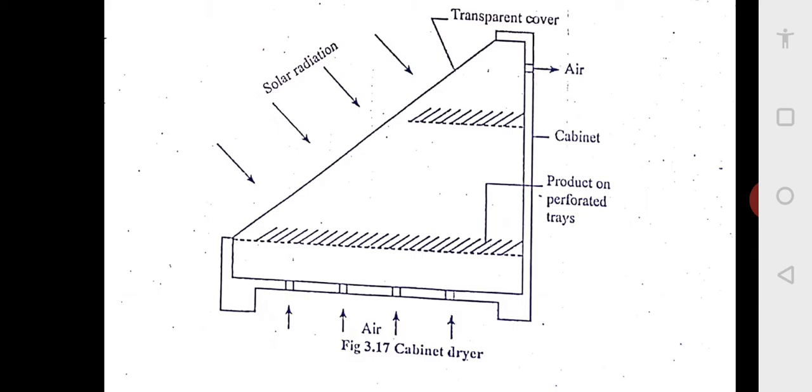As we have discussed earlier also, the solar energy is the highest when it is at an incline to the horizontal surface. That is why this dryer also, you can see the glass transparent cover is inclined only. We are trying to get the maximum amount of solar radiation inside.